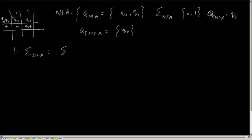Because I have to process the same string, I have to process the same language. The alphabet set on which my new deterministic automata will work will be same as that of a NFA, and it will be 0, 1. The starting state of a DFA will be same as the starting state of a NFA.